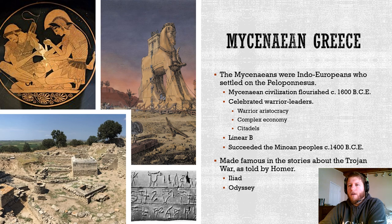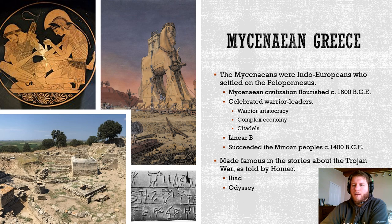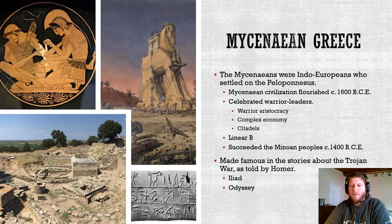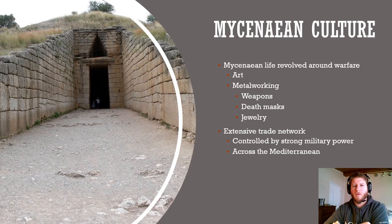You can see the image of the Trojan horse here. Some of you may be familiar with that — it's actually not really in the Iliad and is mentioned only briefly in the Odyssey. The Trojan horse is of course how the Mycenaeans, under the rule of Agamemnon, were able to infiltrate the city of Troy.